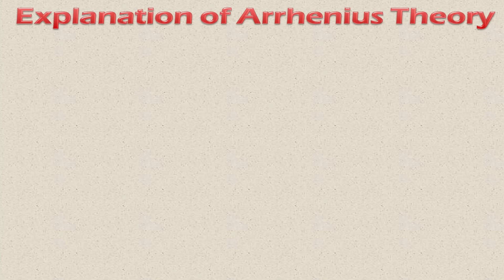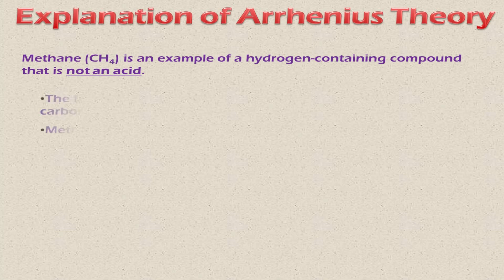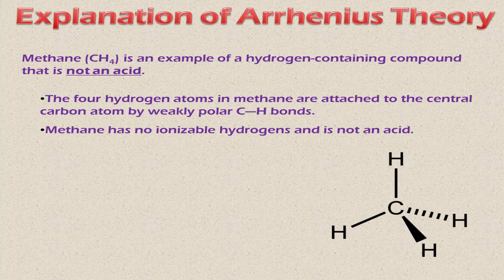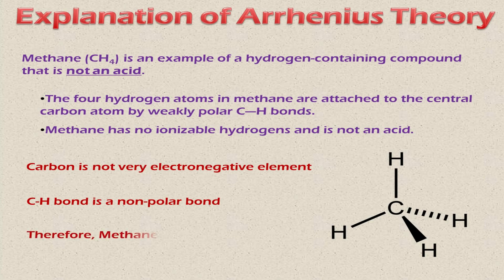Not all compounds having hydrogen can be acids. For example, methane is a hydrogen-containing compound that is not an acid. Although it contains hydrogen, it cannot release those hydrogen ions. The four hydrogen atoms in methane are attached to the central carbon atom by weakly polar bonds. Methane has no ionizable hydrogen and is not an acid. Carbon is not a very electronegative element, as it belongs to Group 4A of the periodic table, so the carbon-hydrogen bond is essentially non-polar, and this compound cannot release any hydrogen ion in water.